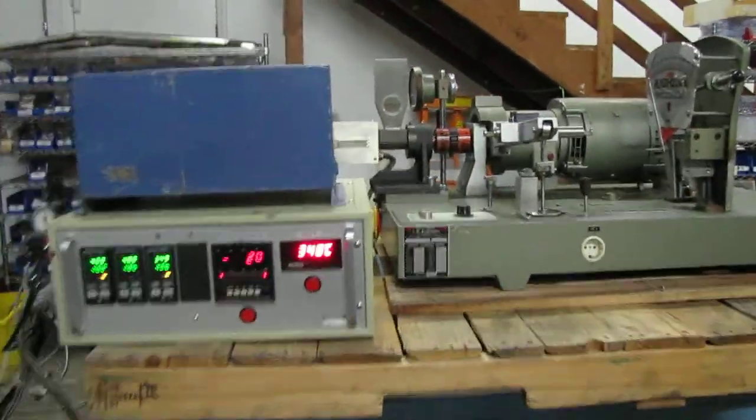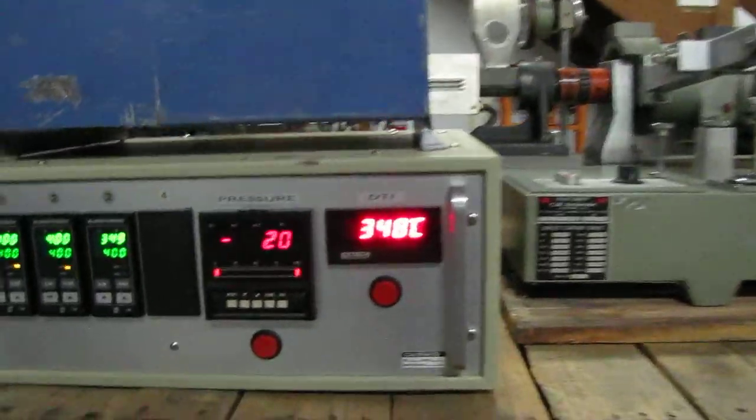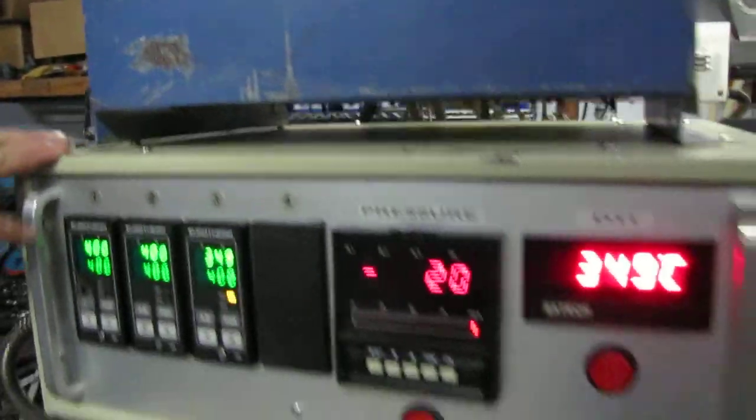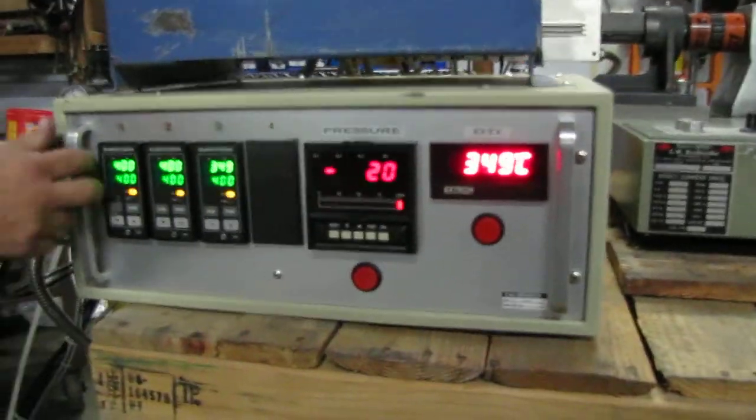Here we have a Brawbender plastic extrusion machine. We got it hooked up to 230 volt single phase. This thing right here that you're looking at with all the lights, this is your temperature controller.